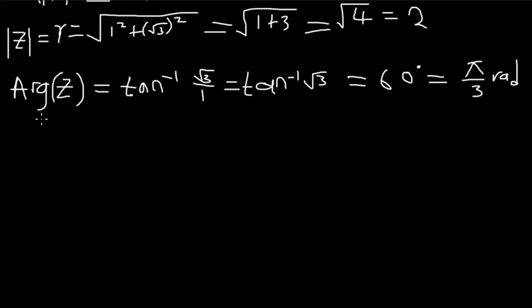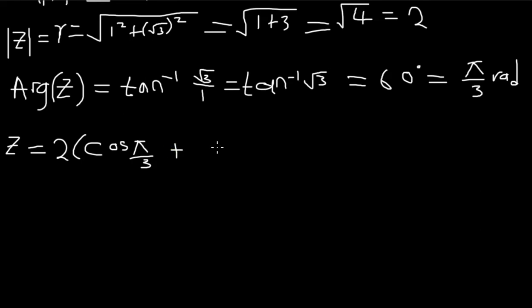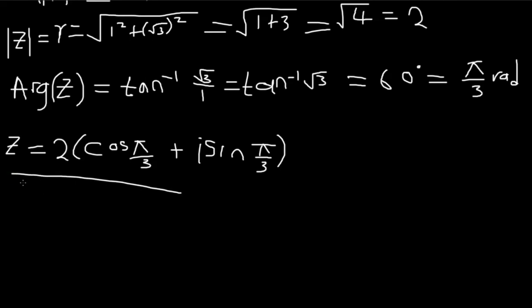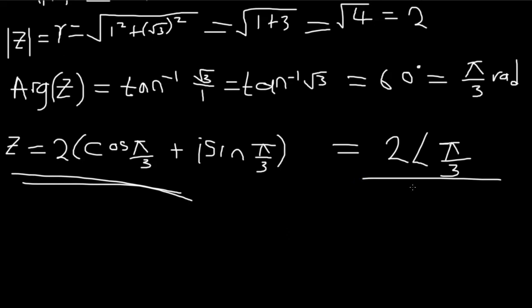So my z in polar form is: z = 2(cos(π/3) + i sin(π/3)). This is the answer for question two. If you want you can also write it as 2∠(π/3), but the recommended form is the cosine-sine one — use that in your exams and tests.